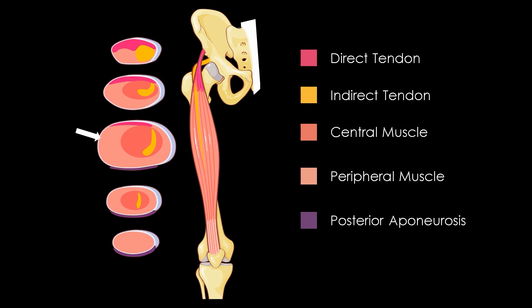There is hence not one rectus femoris, but two, formed by two muscles intertwined with one another: a proximal tubular part centred by the sagittal ridge located at the anterior two-thirds, surrounded by a peripheral biarticular muscle.